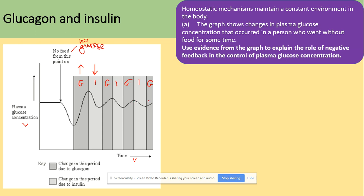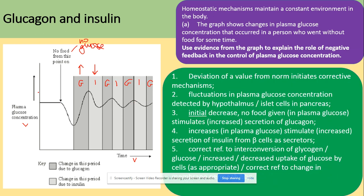But they're all trying to stay within the norm. Looking at the evidence, there are deviations of value from the norm, which shows that the corrective mechanism is in place. The fluctuations will be detected by the hypothalamus or the islet cells in the pancreas — so here we are talking about alpha and beta cells.